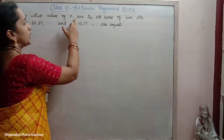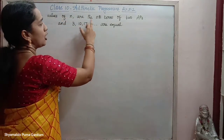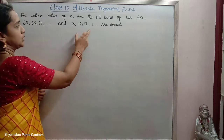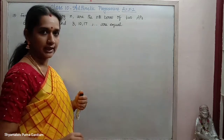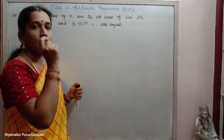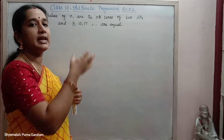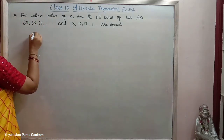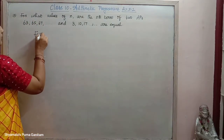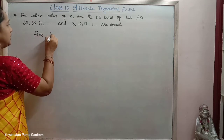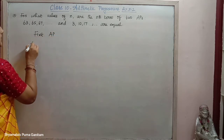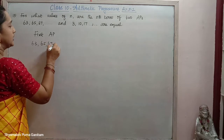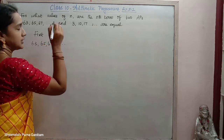Question 15: For what values of N are the Nth terms of 2 APs equal? So 2 APs are given. The 1st AP is given as 63, 65, 67, and it continues like this.